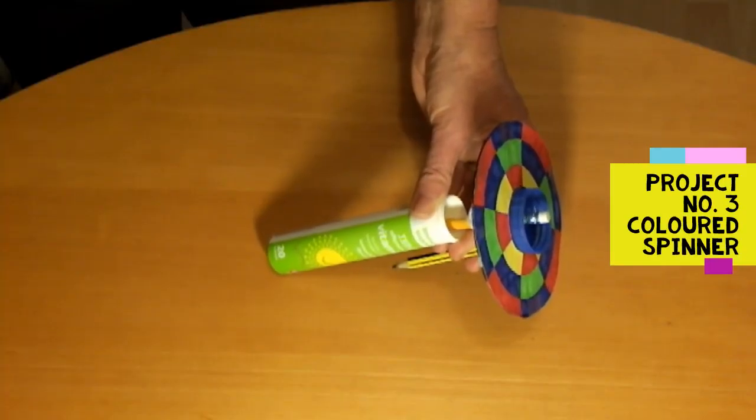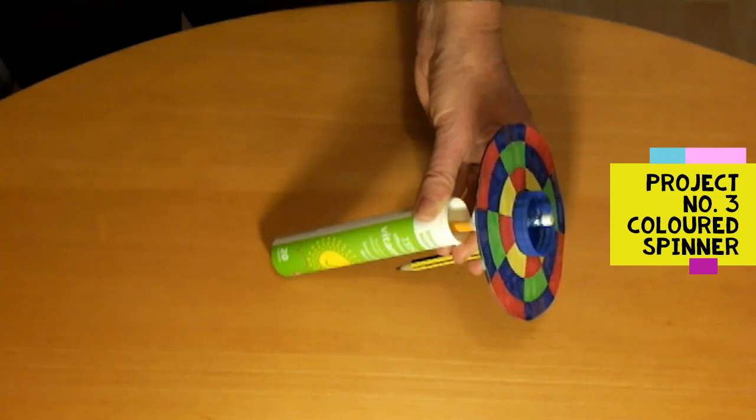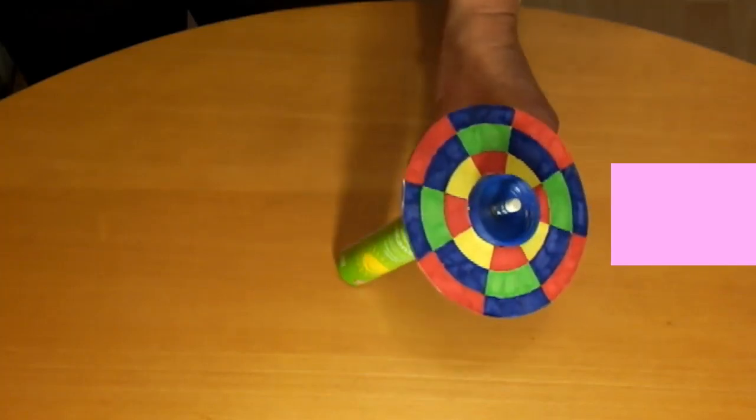This is what we're going to make today. It's a colored spinner. I'm using it to mix light of different colors. I'll show you what it does.